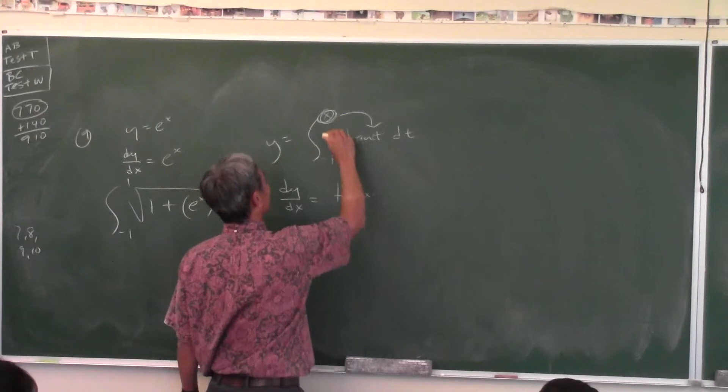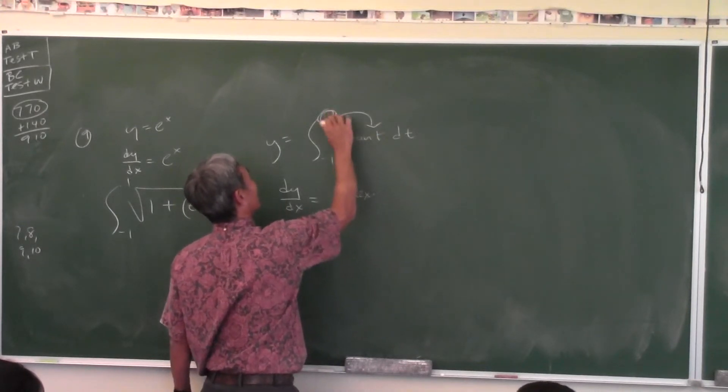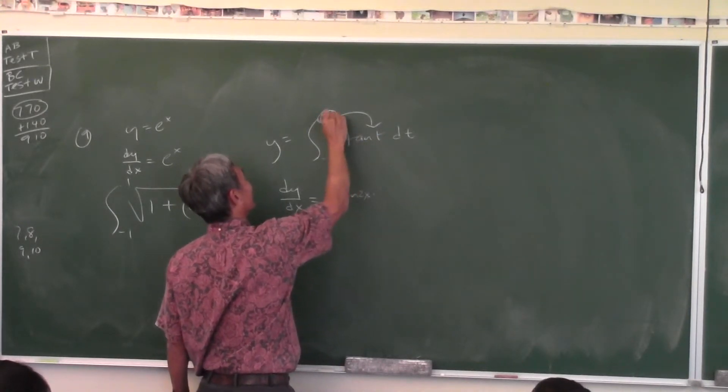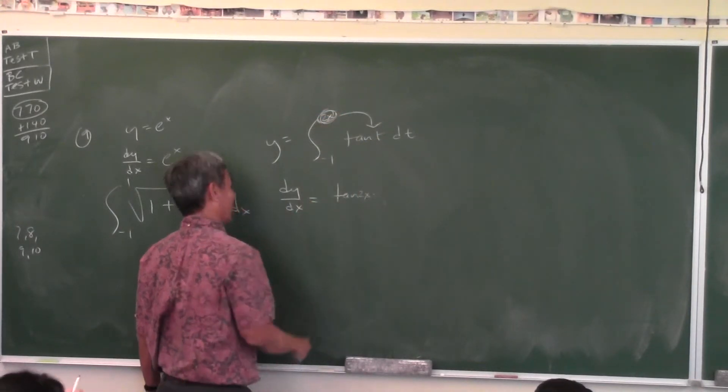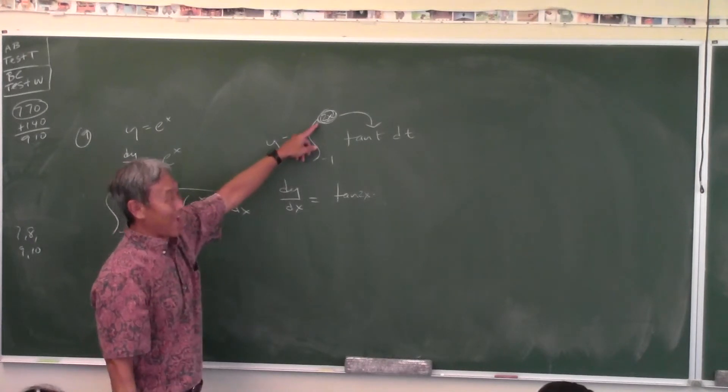You guys are nodding now but I know what's going to happen on the test — I'm going to change that to a 2t or something. Then this would be tangent 2x and then you've got to multiply it by the derivative of 2x, which is 2. I'm going to make that 2x.